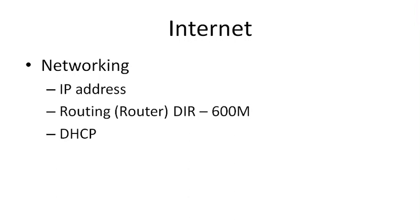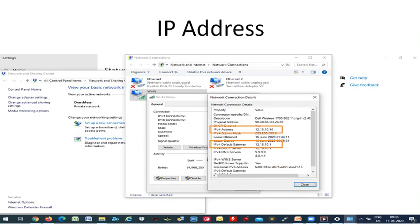For example, a client may give a request to a server using the server's IP address, and the server replies to the client's IP address. To find your IP address on a laptop or computer, go to the Network and Sharing Center. You can access it by right-clicking the network icon in your system tray, then going to Network Connections or Change Adapter Settings.